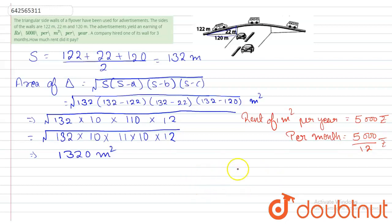And per 3 months, if you want to find out the rent for 3 months, so this will be 5000 by 12 multiplied by 3, right?